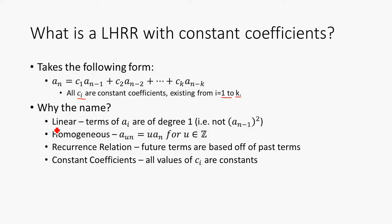So why the name? Well, linear just means that the a_i are all of degree 1, so not a_(n-1) squared. Homogeneous, so basically that just means that a_un equals a_n for u in the integers. Don't worry about that too much.